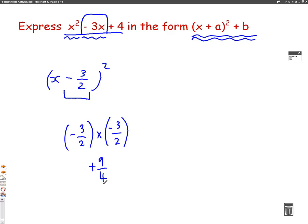Well, we don't want the 9 over 4, so we're going to get rid of it. So we're going to take away 9 over 4. Don't want that bit. Which bit do I want? I want the plus 4 at the end. So we're going to put a plus 4 there.